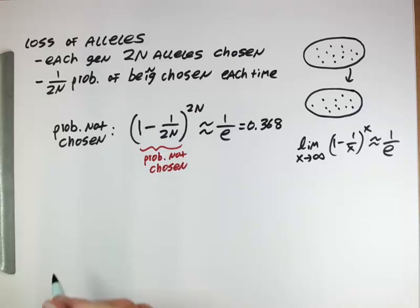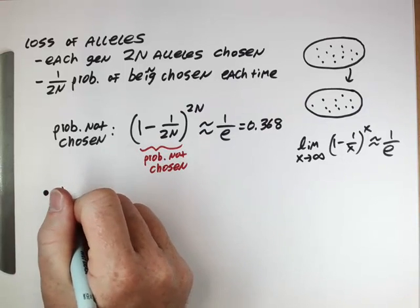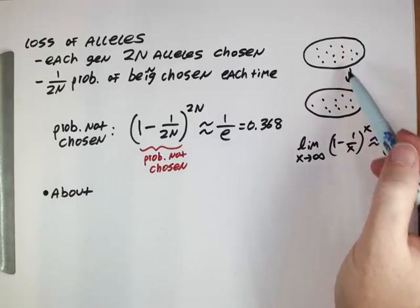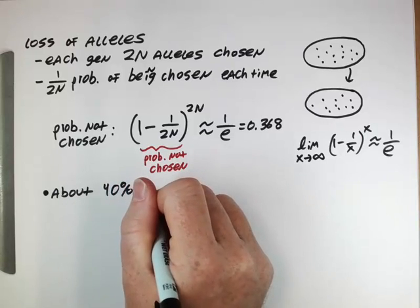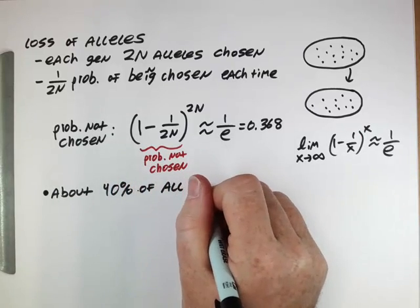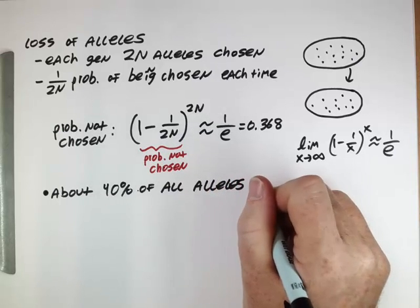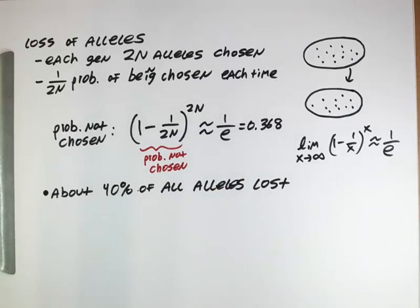So what does that mean? That means in each generation where this kind of random choice of alleles is going on, about 40% of all the alleles are lost. So you have a population of a whole bunch of alleles. Each generation, about 40% of those alleles are not going to make it to the next generation. And that's per generation. It's compounded over time. So we can actually see how even if we start with a very diverse population, we can end up with not a lot of different types of alleles after a period of time.